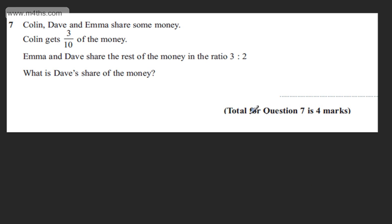This is question number seven and it carries four marks. We're told Colin, Dave and Emma share some money. Colin gets three tenths of the money. Emma and Dave share the rest of the money in the ratio three to two. What is Dave's share of the money?